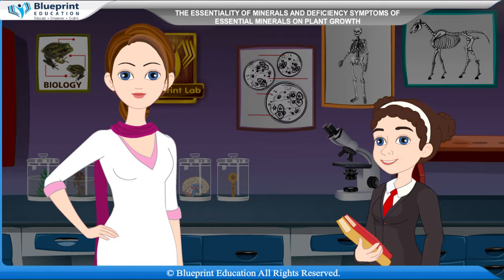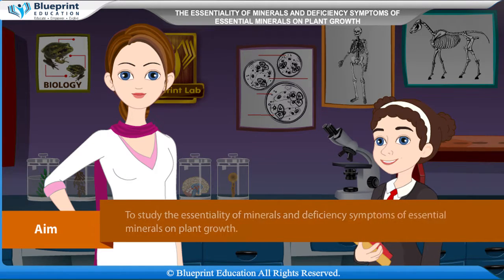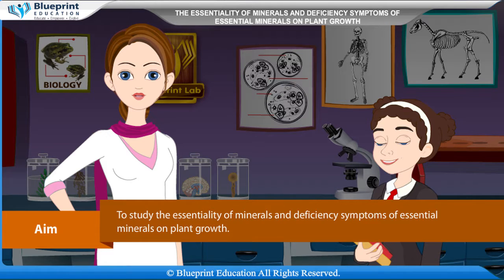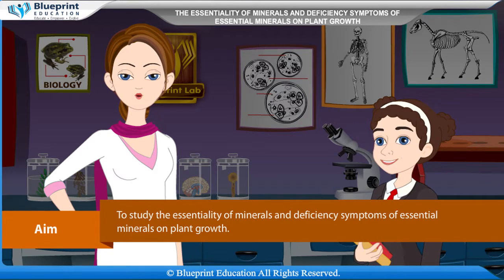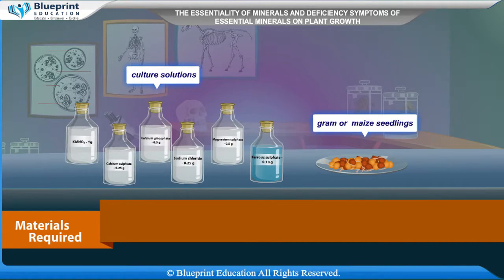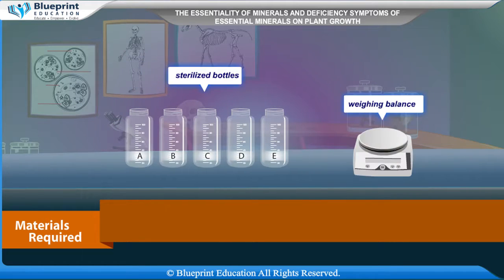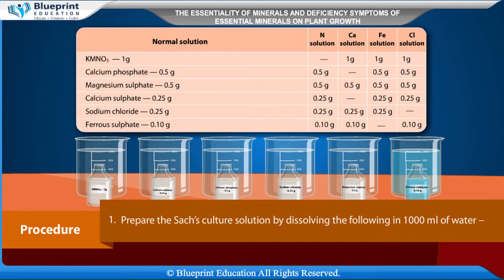Let's do an experiment to study the Essentiality of Minerals and Deficiency Symptoms of Essential Minerals on Plant Growth. Our aim is to study the essentiality of minerals and deficiency symptoms of essential minerals on plant growth. Materials required are: culture solutions, gram or maize seedlings, sterilized broad-mouthed bottles, and a wind balance.